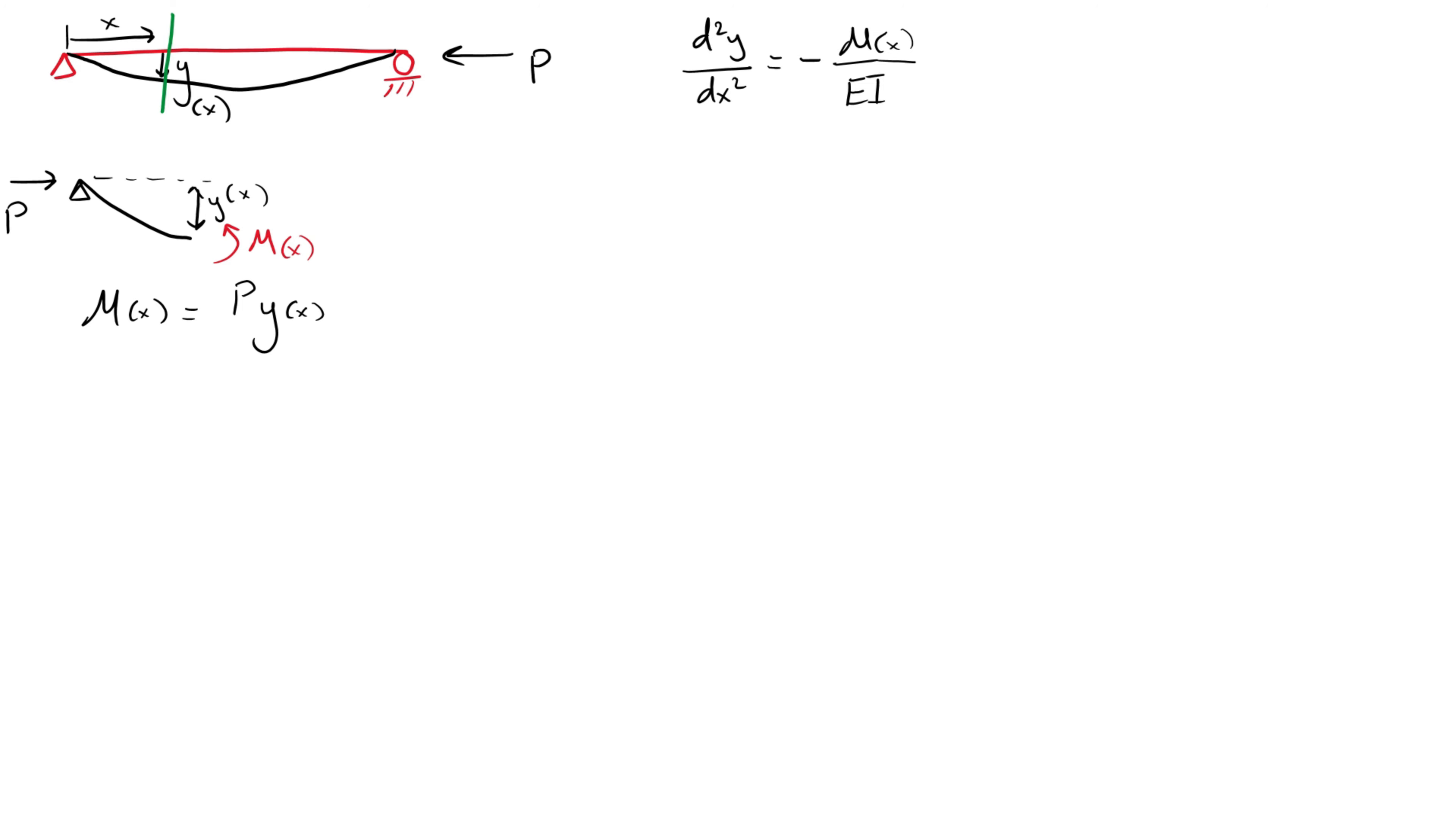Because y changes along x and is a function of x, this means that the bending moment is also a function of x. The governing equation of an Euler-Bernoulli beam is the following, which physically means that the bending stiffness EI multiplied by the curvature inside of the beam at x is equal to the bending moment at x.